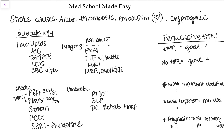Depending on what study you look at, dual antiplatelet therapy can be given anywhere from 21 to 90 days, and that kind of depends on the patient. After 90 days, though, it is not recommended to have patients on dual antiplatelet therapy. So if you see them anytime after three months post-stroke and they're still on both medications, make sure they are following up with pharmacy, neurology, or someone about managing those medications, because the risks of repeat bleed do outweigh the benefits after 90 days.